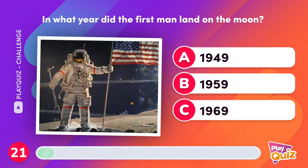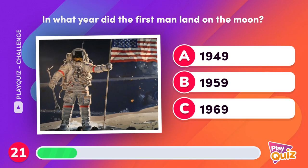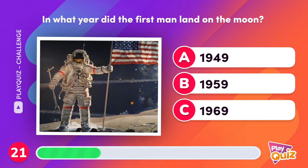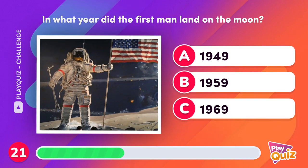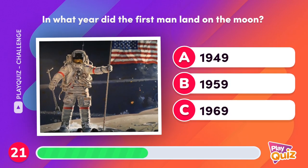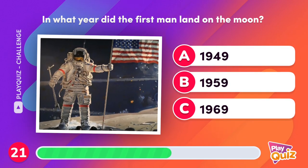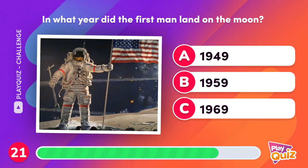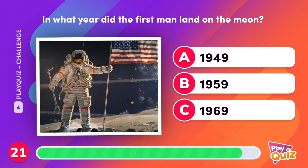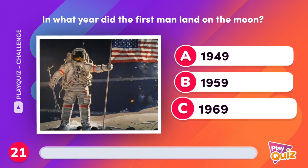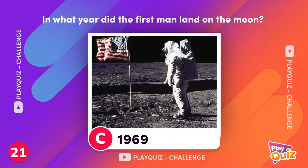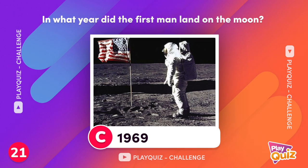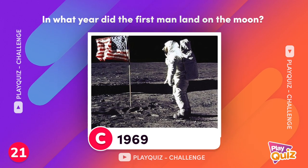In what year did the first man land on the moon? In July 1969, on the American mission Apollo 11.